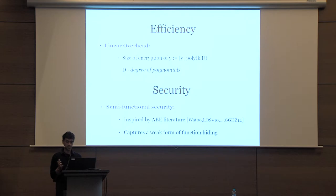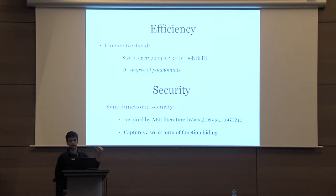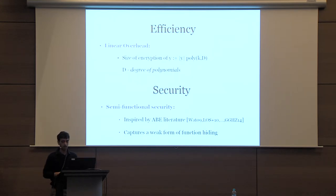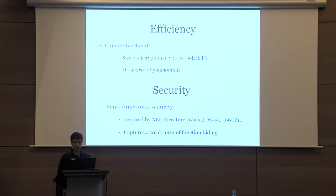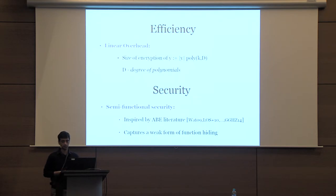There are two main properties associated with the scheme. The efficiency property says that the size of the encryption should be a multiplicative overhead in the size of the message, with the multiplicative factor polynomial in the security parameter and degree d—and since d will be constant in this work, you can ignore it. For security, we define what we call semi-functional security, inspired by the semi-functional security notions defined for ABE, where it was introduced to capture adaptive security. In this work, we define it to achieve a weak form of function hiding that lets us prove things more easily.